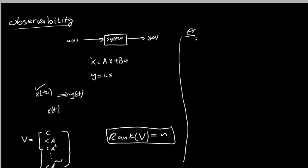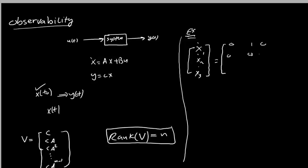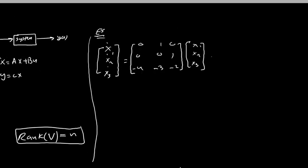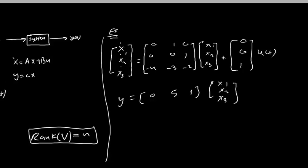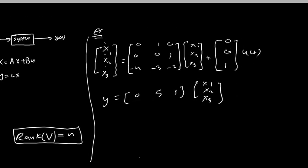Let's take an example. We have a third-order system with three state variables X1, X2, X3. The A matrix is [0 1 0; 0 0 1; −4 −3 −2], the B vector is [1; 0; 1] times U(t), and Y(t) = [0 5 1] times [X1; X2; X3]. We need to obtain the observability matrix and check if the system is observable.